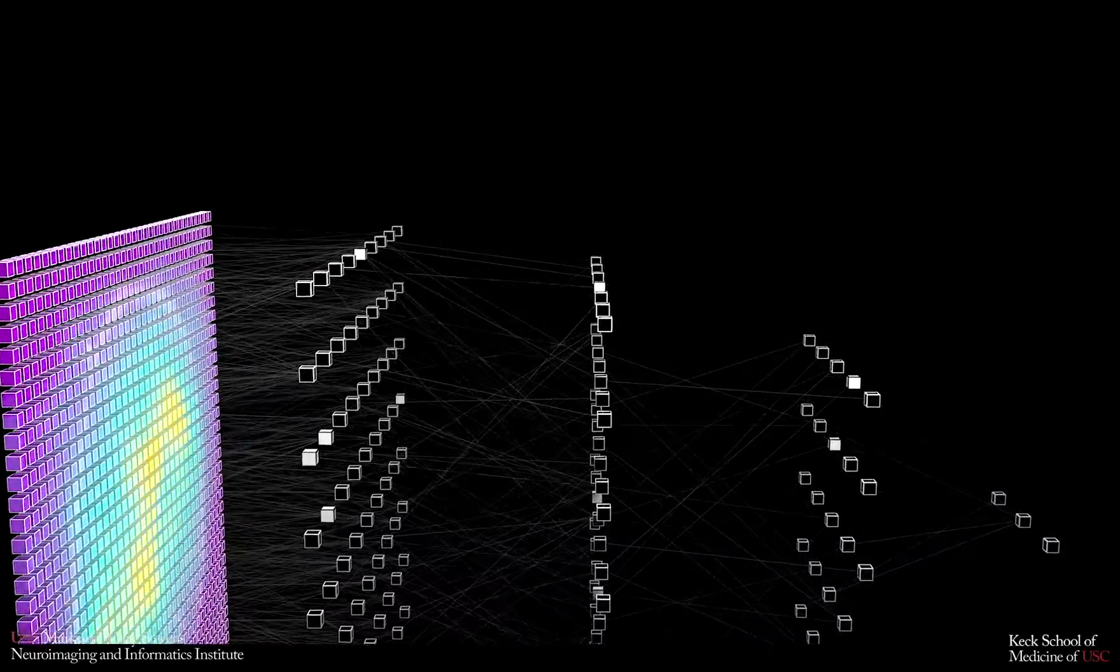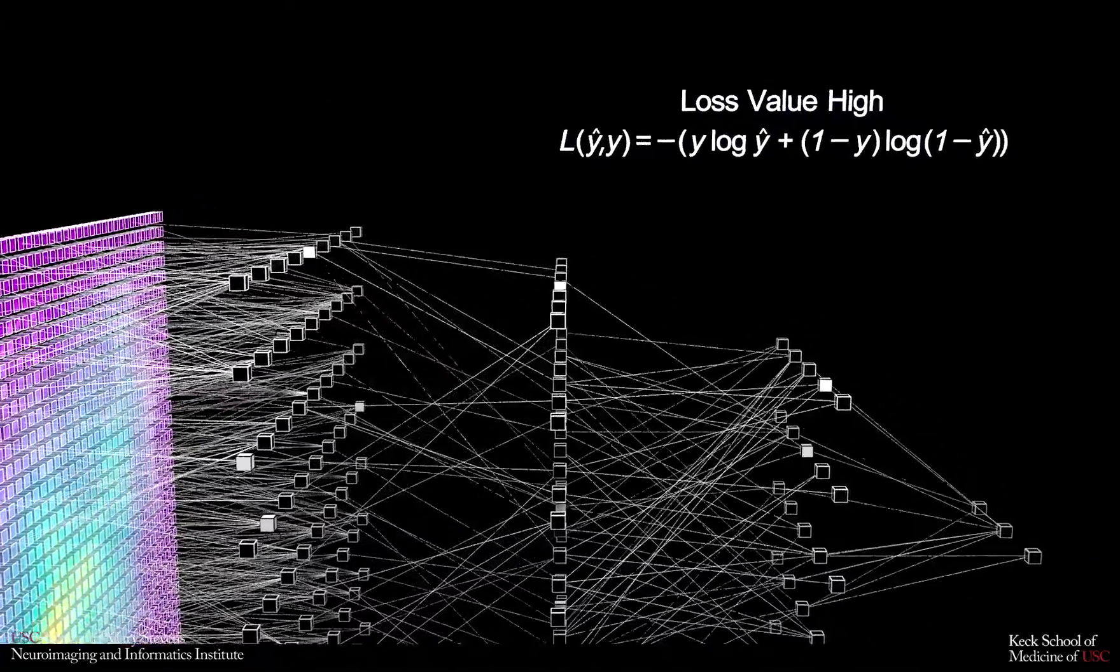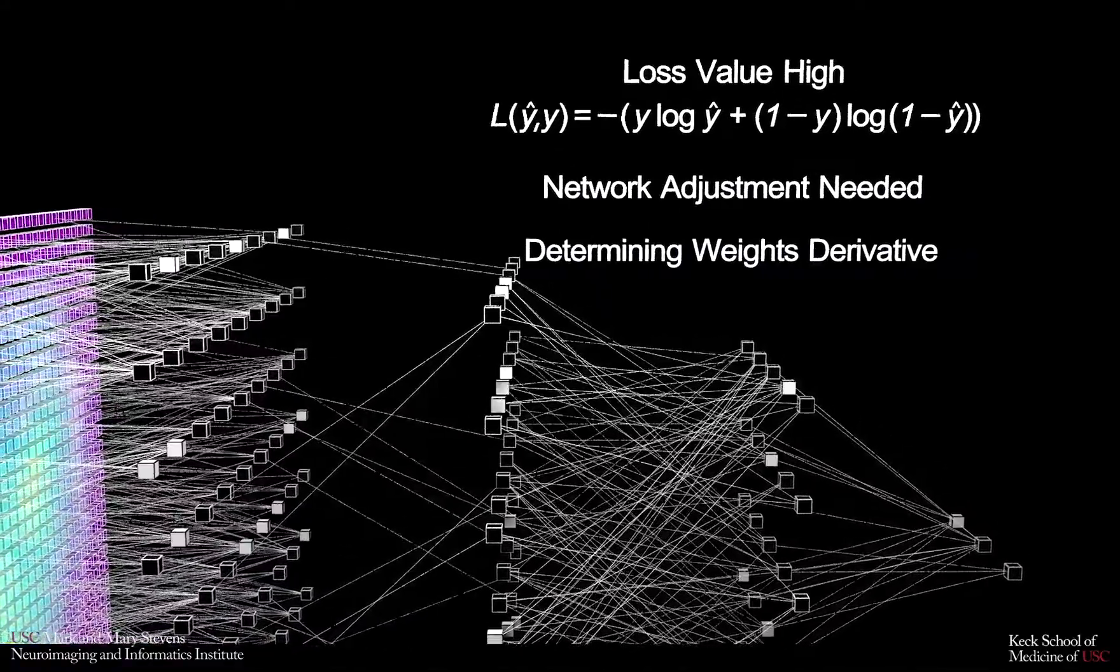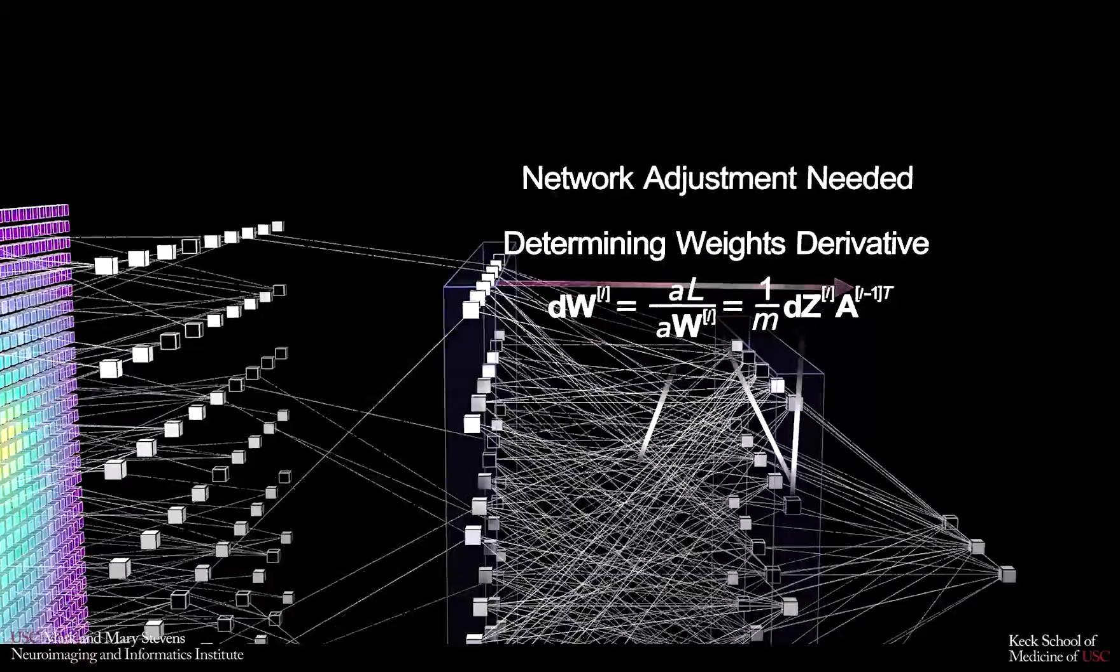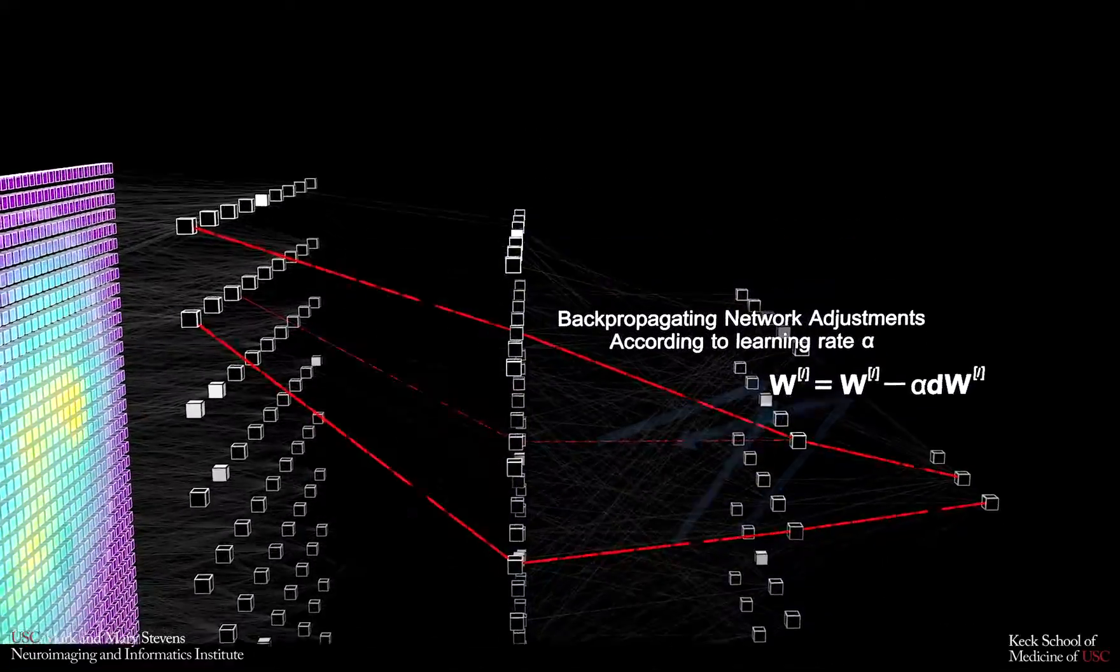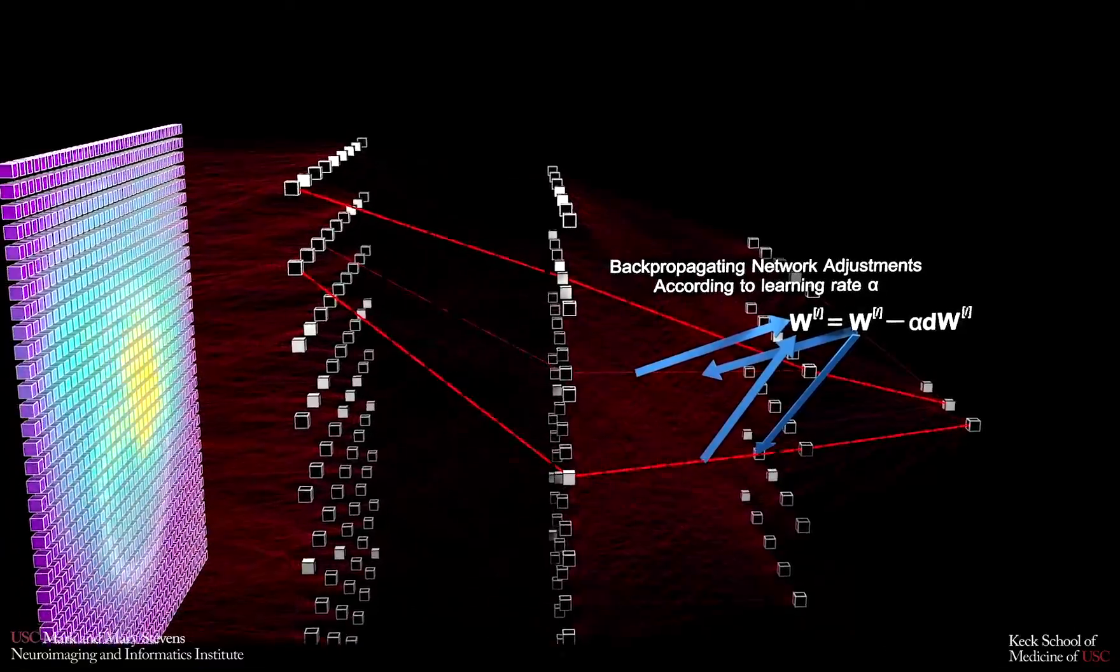We can then computationally and analytically use AI to look for patterns in these types of inputs to find things no human could detect, like the person's risk for developing Alzheimer's Disease or what specific treatments would be more likely to work than others.